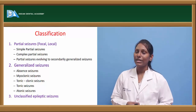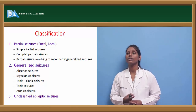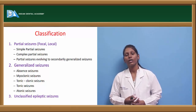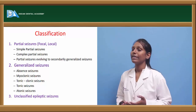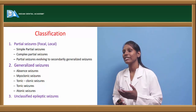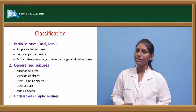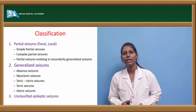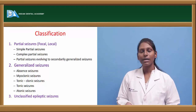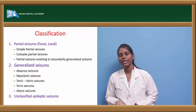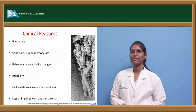Partial seizures, which can be focal or local, include simple partial seizures, complex partial seizures, and partial seizures evolving to secondary generalized seizures. Generalized seizures include absent seizures, myoclonic, tonic-clonic, tonic, and atonic seizures. Some seizures remain as unclassified epileptic seizures.